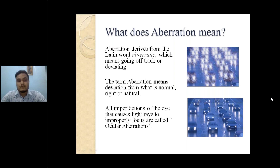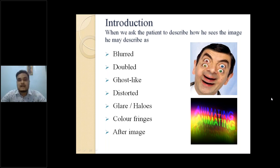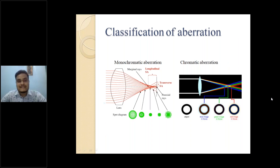All imperfections of the eye that cause light rays to improperly focus are called ocular aberrations. Even in an emmetropic patient with no refractive error, aberrations can occur. When we ask patients how they see images, they may describe blur, ghost-like images, distorted images, color fringes, glare, halos, or after-images.